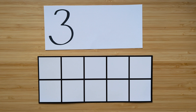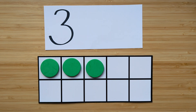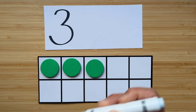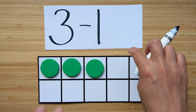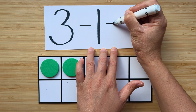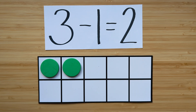Make the number three. Point and count. One, two, three. What's one less than three? Point and count. One, two. Two is one less than three. Nice job. Clear off your boards.